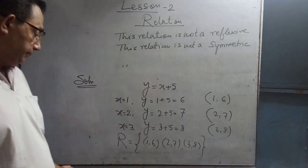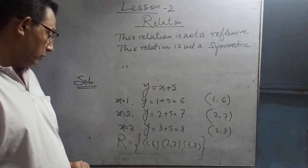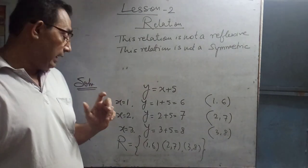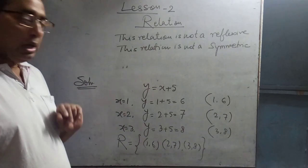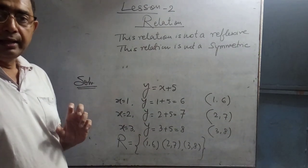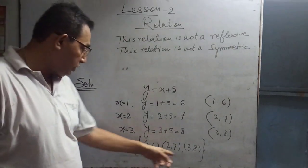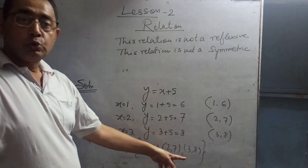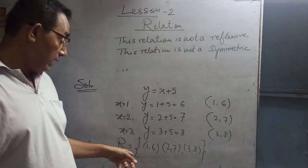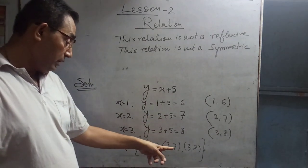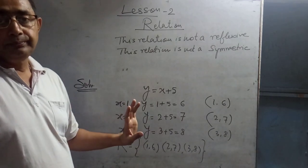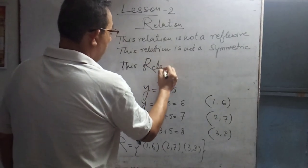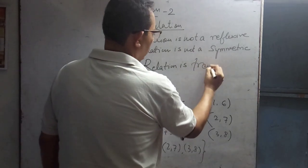Now we check transitive. For transitive: if (A, B) belongs to R and (B, C) belongs to R, then (A, C) belongs to R. Here, no such situation is formed in this relation, so it is transitive.